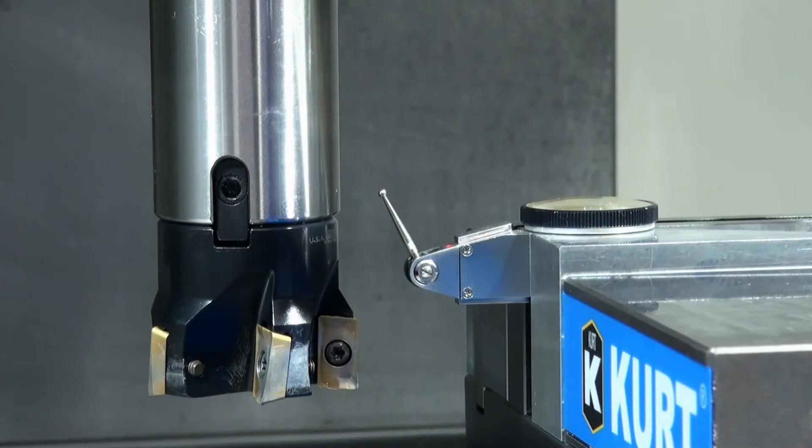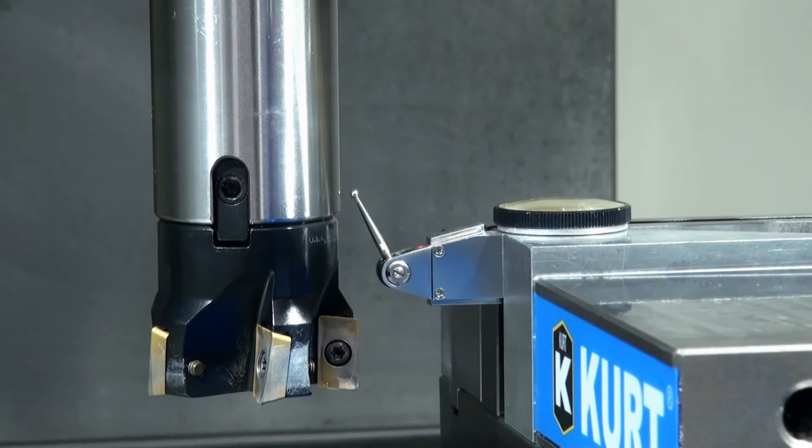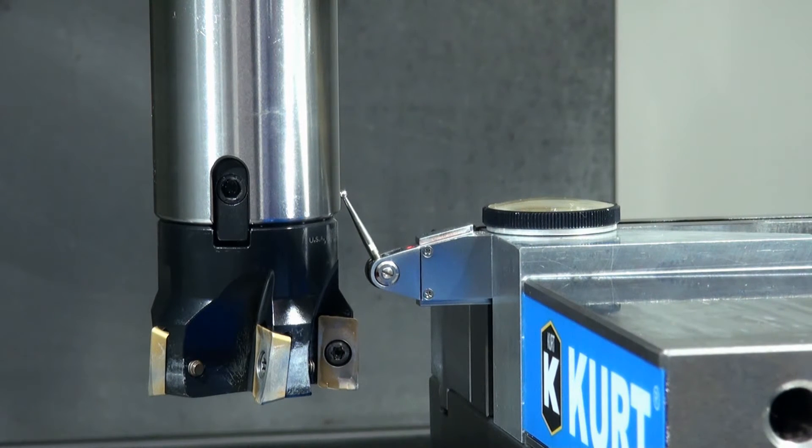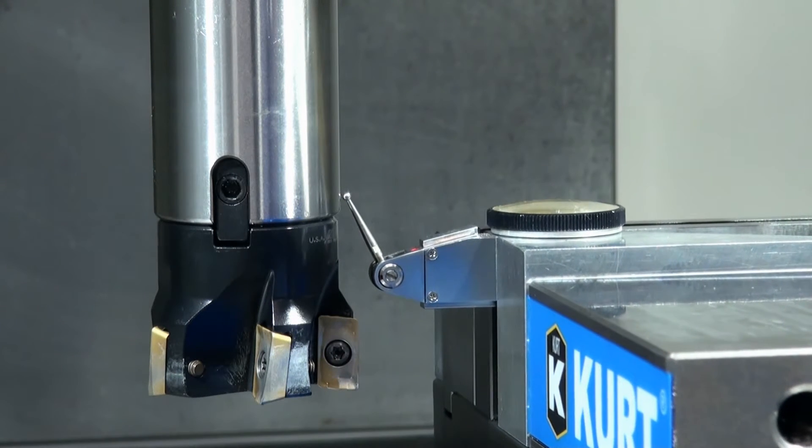Okay so you can see our setup here I just have a test indicator sitting in the vise it's just hand tight don't reef down on it and what I'm going to do is I'm going to jog the tool to the test indicator and then the first thing we want to do is we want to zero our y.